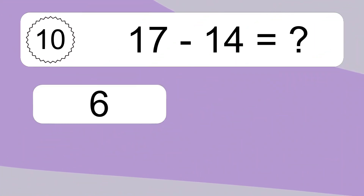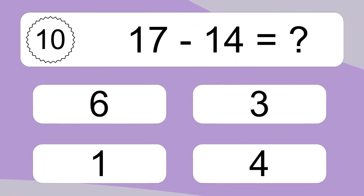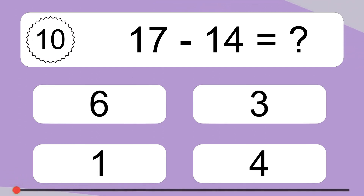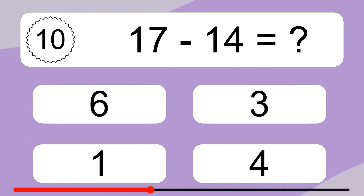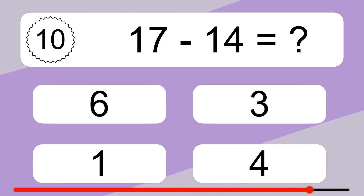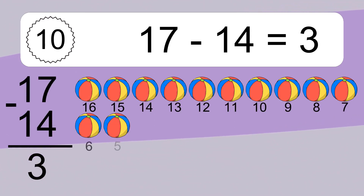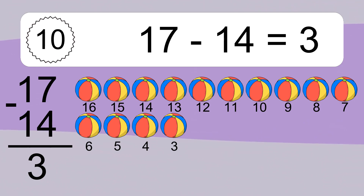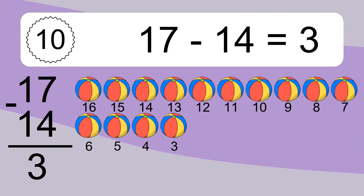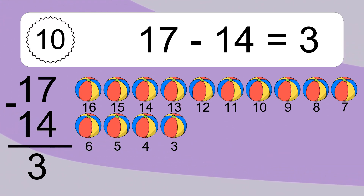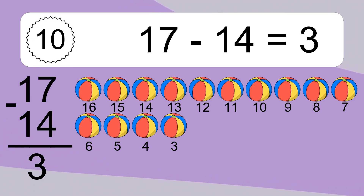17 minus 14 equals what? 17 minus 14 equals 3. Let's count it: 16, 15, 14, 13, 12, 11, 10, 9, 8, 7, 6, 5, 4, 3.